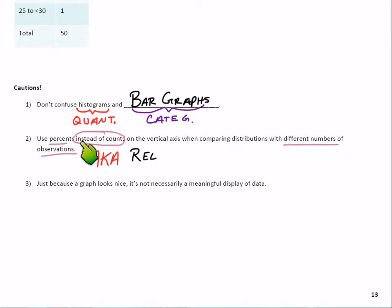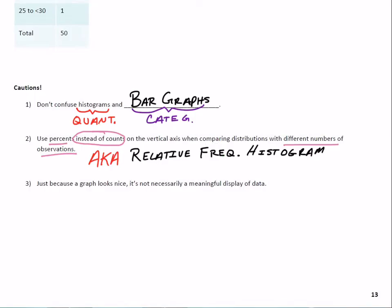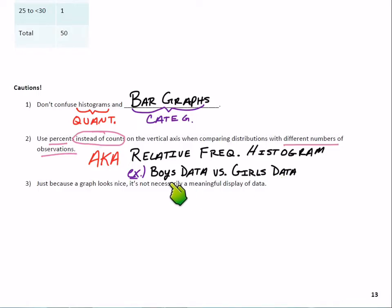Caution two: use percents instead of counts on the vertical axis when comparing distributions with different numbers of observations. For example, if I want to compare a boys' data set to a girls' data set but had more boys than girls in the study, it wouldn't be fair to compare counts. Use a relative frequency histogram to make comparisons when you have different numbers of observations.